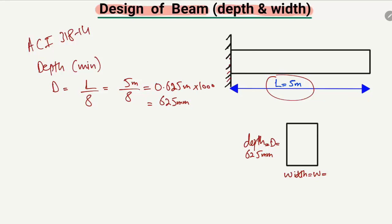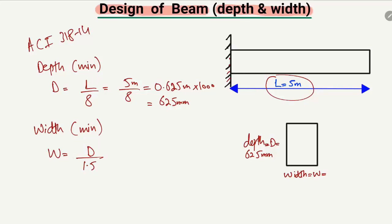Now, what is the minimum width of the beam? The minimum width is equal to the depth of the beam divided by 1.5. The depth is known to us: 625 mm. So 625 divided by 1.5 gives us 416 mm. The width of the beam is equal to 416 millimeters.